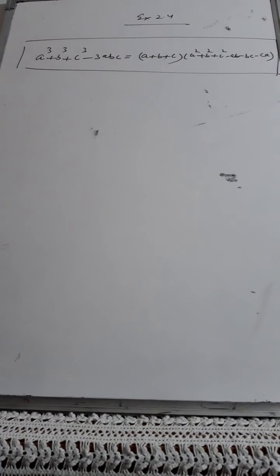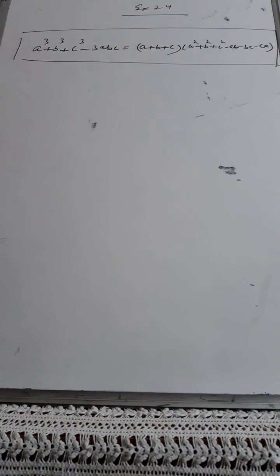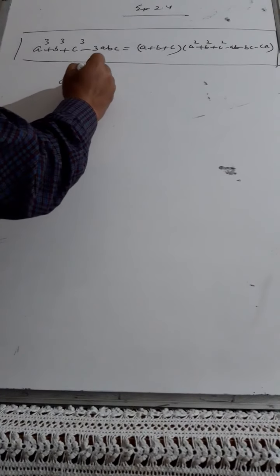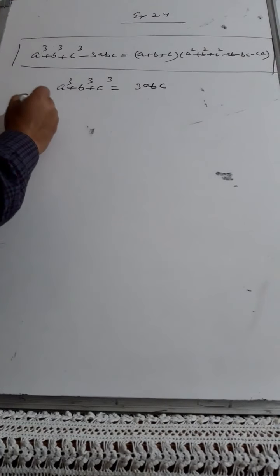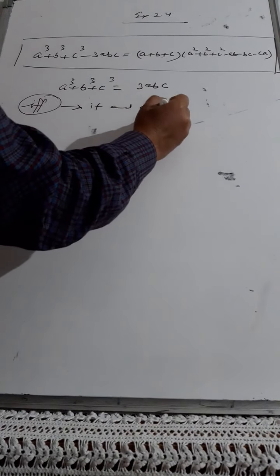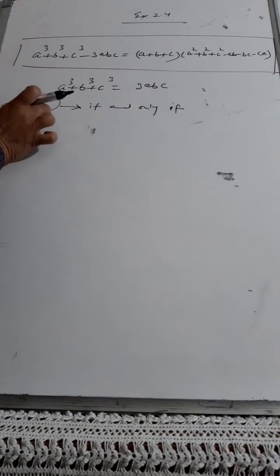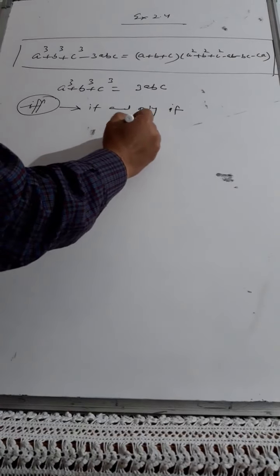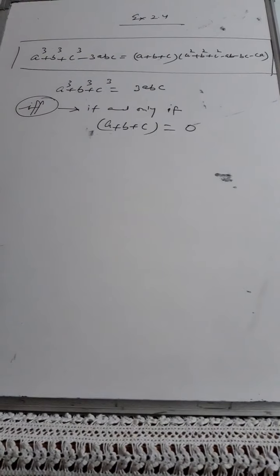From the application point of view, particularly in questions based upon this identity: a³ + b³ + c³ = 3abc if and only if a + b + c = 0. So as we identified in our previous questions, if the sum of a, b, and c equals zero, this simplification applies.